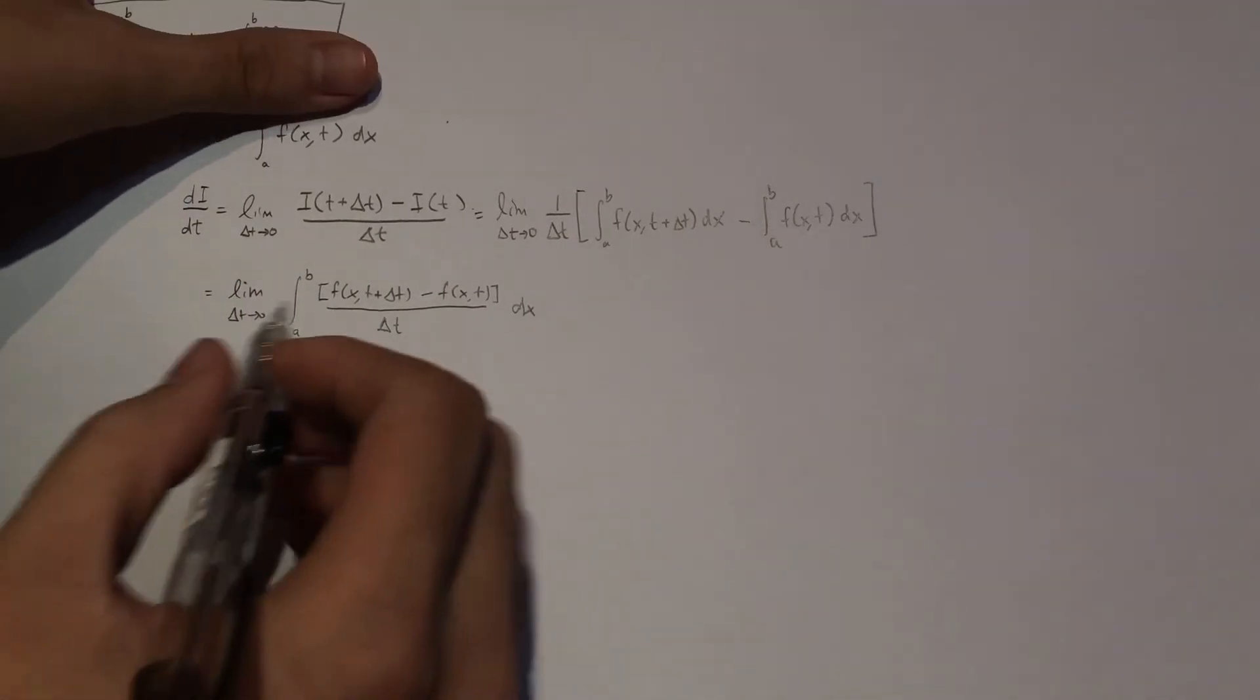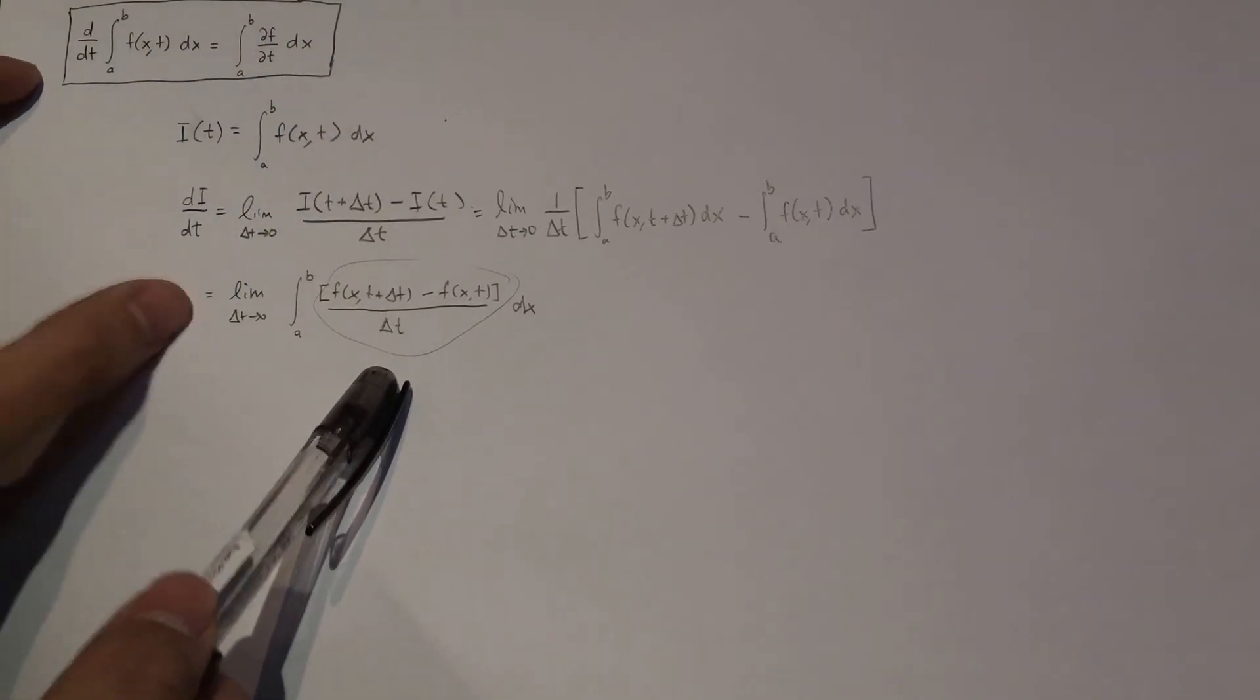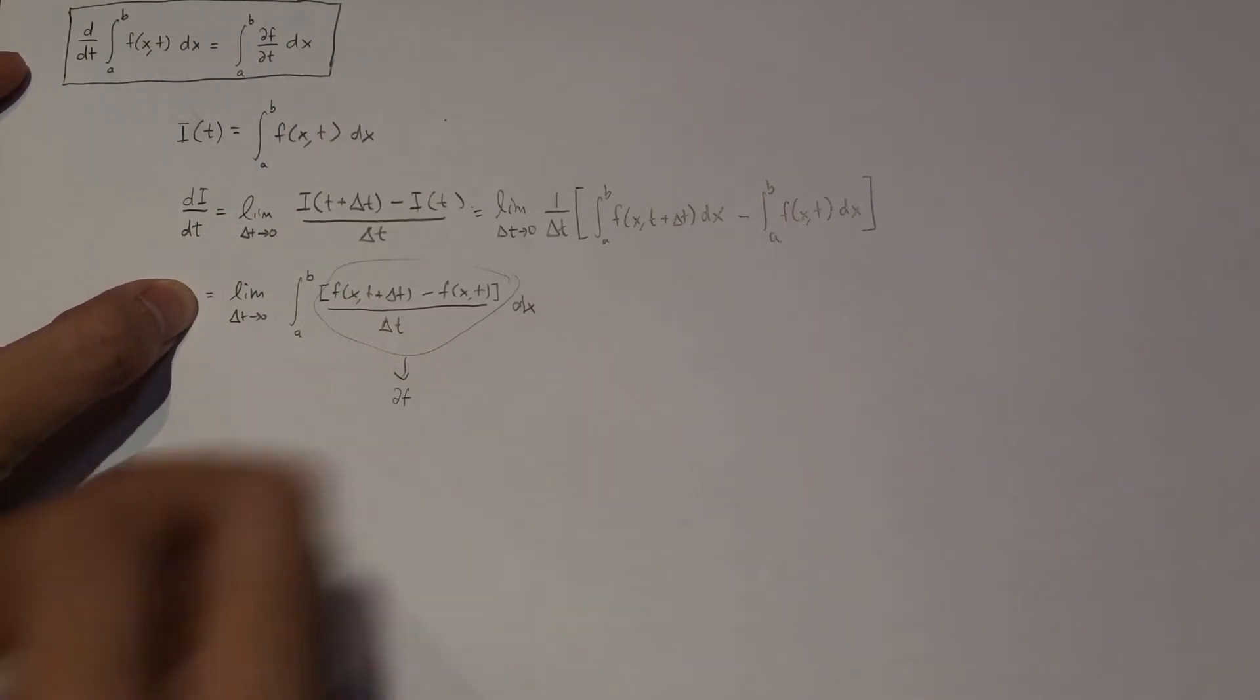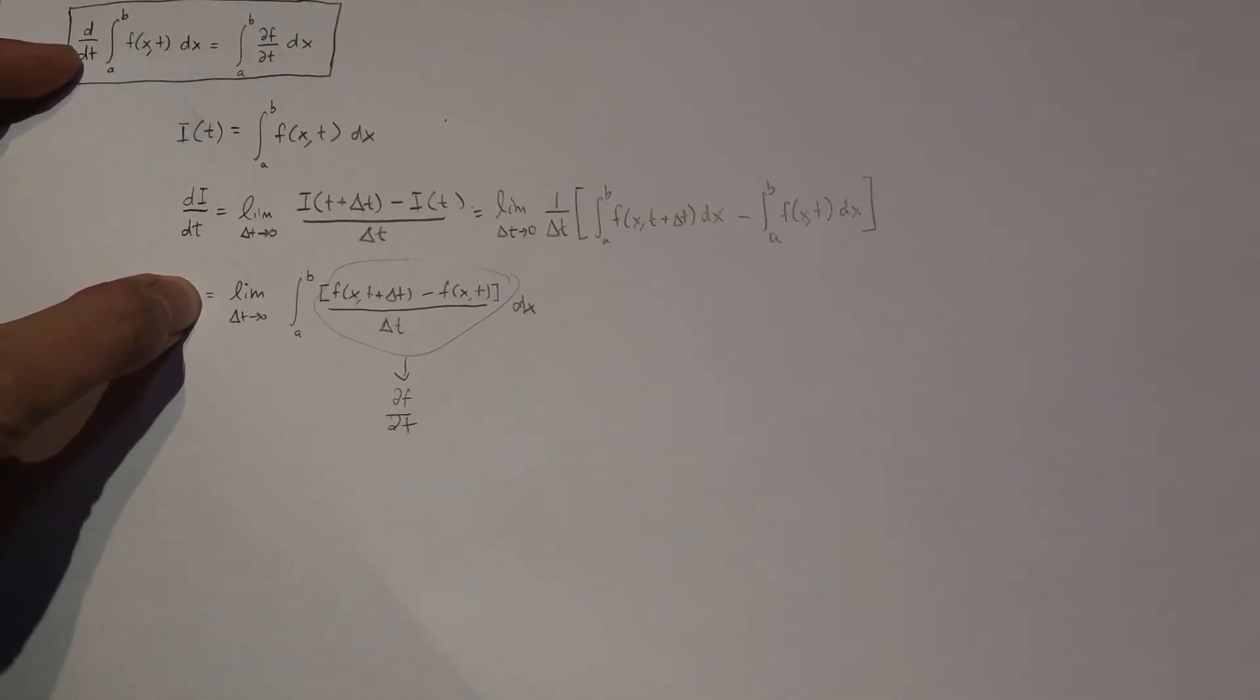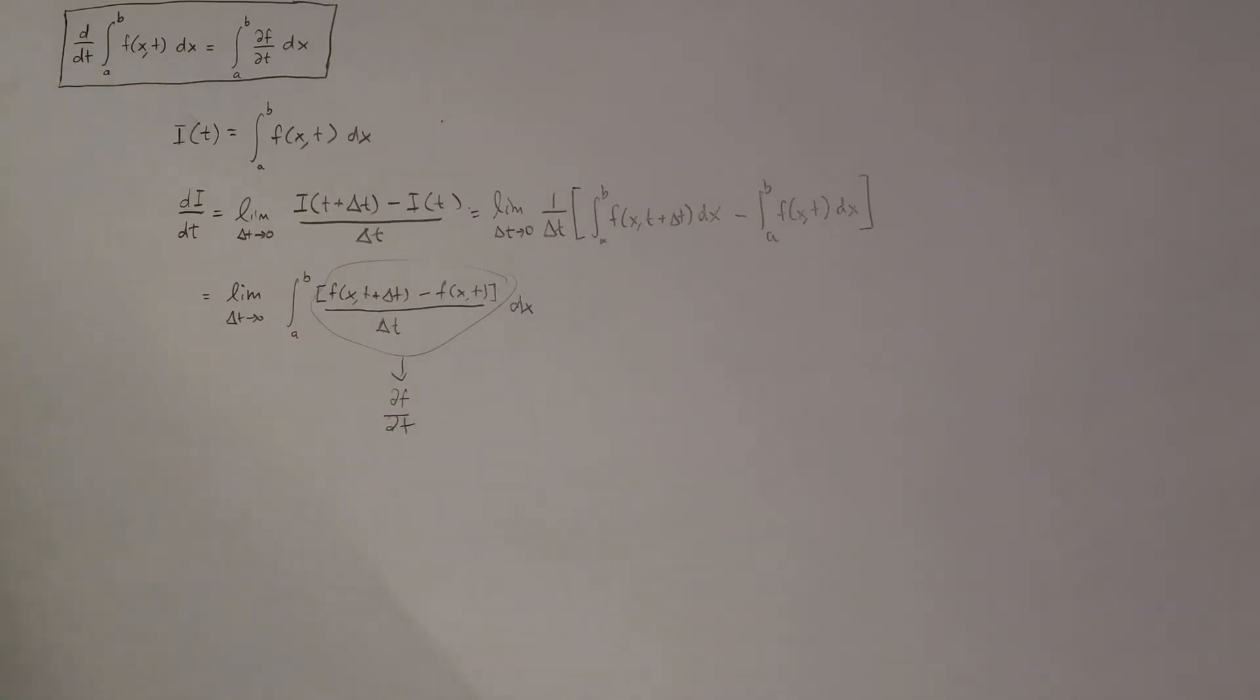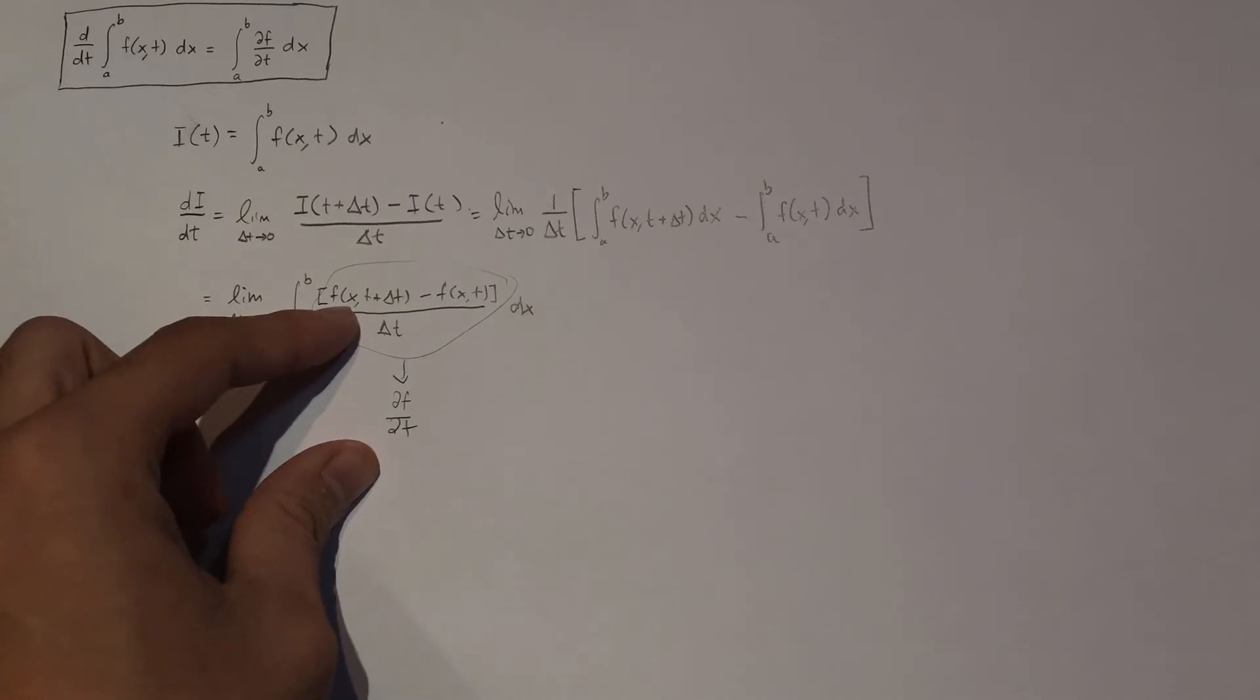Now, as you can see here, look over here. What this is, this is just the derivative of F with respect to T. And we know that's true because this is just, well, the definition of the derivative, because here we have the limit as delta T approaches zero of the function as T plus a bit of delta T minus F at a particular value of T, divided by that small change in T.